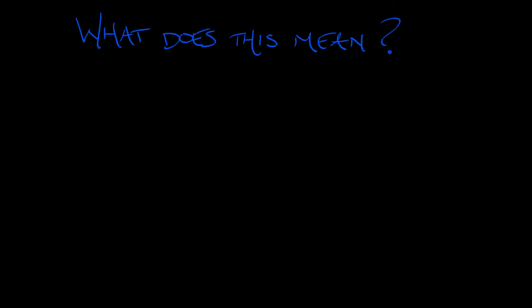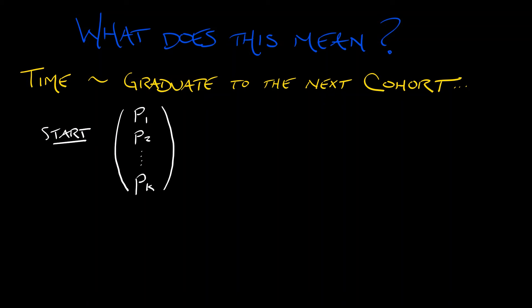What this is doing is this is encoding that discrete time as moving or graduating to the next cohort. So what I mean is you start with some population vector, p1, p2, all the way up through pk at time 0. At time 1, everybody is graduated to the next age cohort. There's a 0 because there's no new people, no new population, no births. And then p1 and then p2 all the way up through pk minus 1.